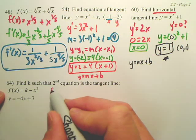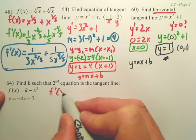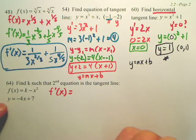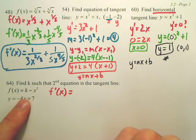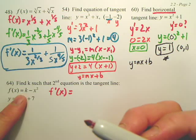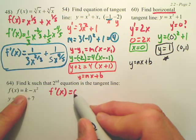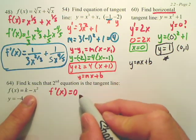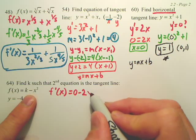If I take f, what's f prime going to be? Well, what's the derivative of a constant? Derivative of k, which is a number. What's the derivative of a number? Zero. And what's the derivative of this? Negative two x.